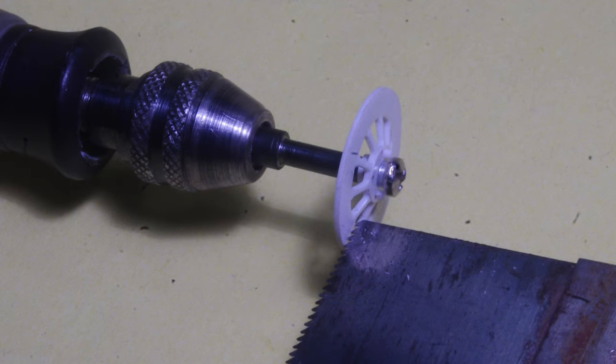Attach the brake rotor to the sanding drum shaft with the smooth side facing out. With the motor tool running at low speed, a razor saw can be used to score grooves into this side of the brake rotor.